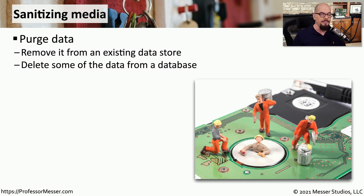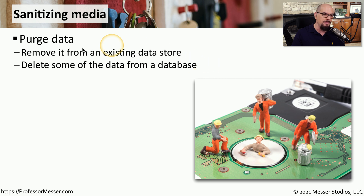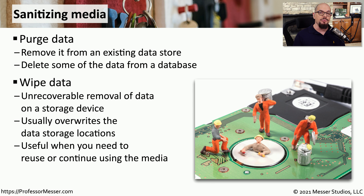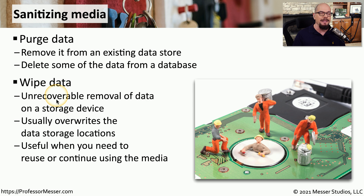If you don't want to destroy the media, you may just want to remove some of the data from it. If you want to remove a portion of the data, then you're doing a purging of that information. This would remove a single file or a section of data from an existing data store — for example, deleting some of the data in a database. In some cases, we want to remove data so that it could never be restored, and in that case we would want to wipe that particular data. This is an unrecoverable removal of that data, so not only are we deleting the file or section of the database, we're making it so that data could never be restored on that system.